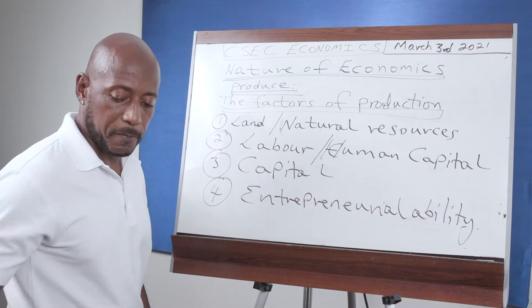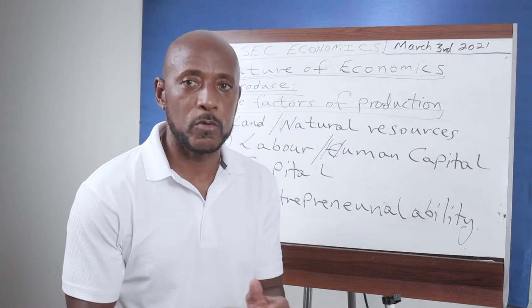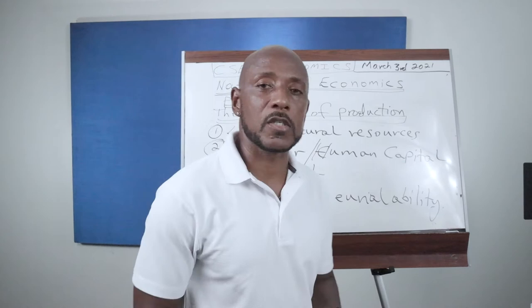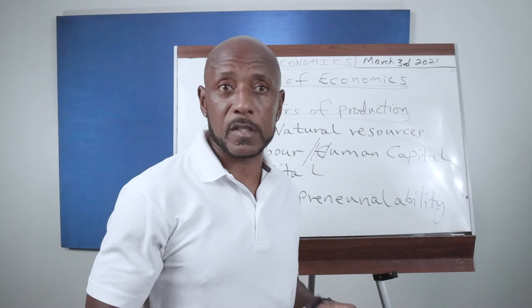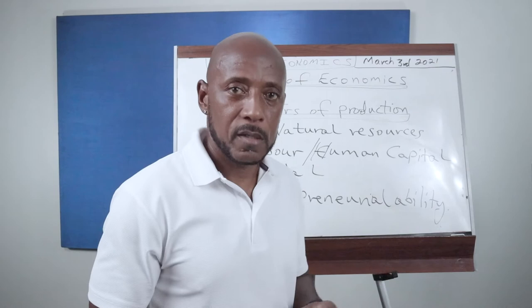Let's look at these factors of production one by one so that we have a clear understanding of what they mean and how they factor into the production process. Land, or natural resources, are required in the production process. Land refers to gifts of nature — your marine resources, the sea, the oceans, the actual land that you farm or drill for oil, and other raw materials which come from nature. That is referred to as land or natural resources.